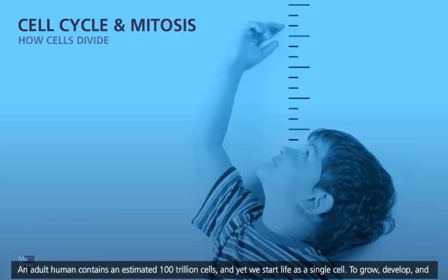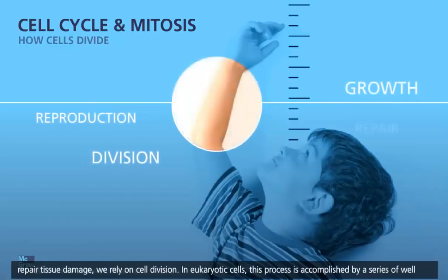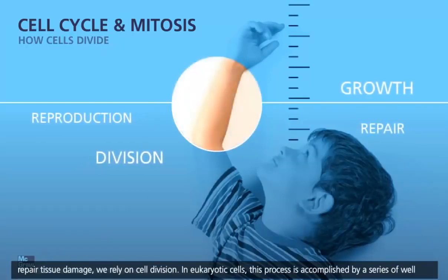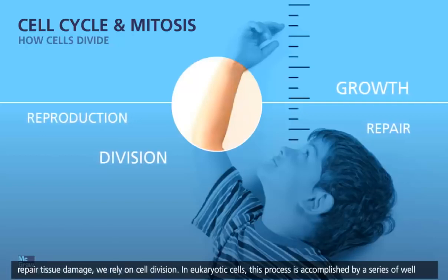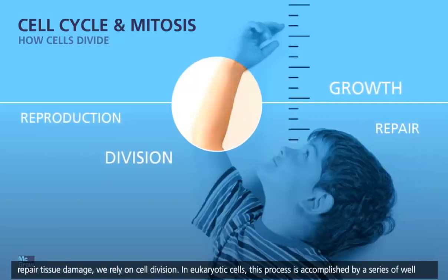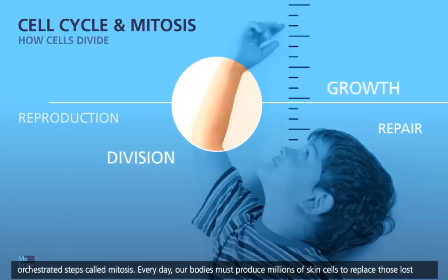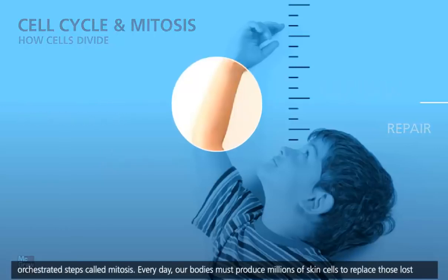An adult human contains an estimated 100 trillion cells, and yet we start life as a single cell. To grow, develop, and repair tissue damage, we rely on cell division. In eukaryotic cells, this process is accomplished by a series of well-orchestrated steps called mitosis.